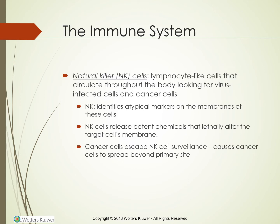Natural killer cells, abbreviated NK, are lymphocyte-like cells that circulate throughout the body looking for virus-infected cells and cancer cells. NK cells can identify atypical markers on the membranes of these cells without the help of T-cell or B-cell lymphocytes. Once identified, NK cells release potent chemicals that lethally alter the target cell membrane, leading to its death. Unfortunately, cancer cells can escape NK cell surveillance, which explains how cancer is able to become established and spread beyond its primary site.